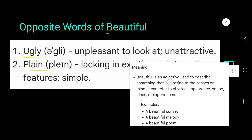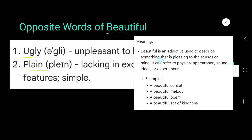Beautiful is an adjective used to describe something that is pleasing to the senses or mind. It can refer to physical appearance, sound, ideas, or experiences.